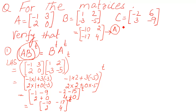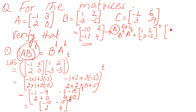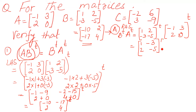Now we are solving the right hand side: B transpose times A transpose. It should be equal to this matrix — the left hand side result. We will see B transpose A transpose. First we take the transpose. What is B? It is 1, 2, negative 3, negative 5 — transpose. And A is negative 1, 3, 2, and 0 — transpose. So: the first row becomes a column, the second row becomes a column — this is the transpose of B. This is the transpose of A. Now we no longer need to write the T, because we have already taken the transpose.